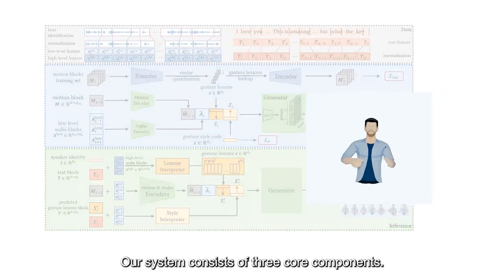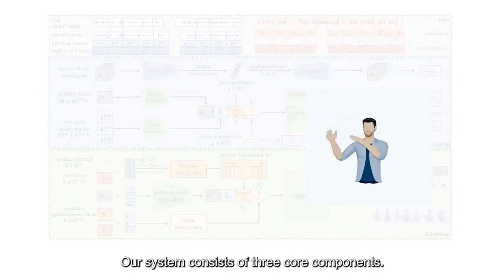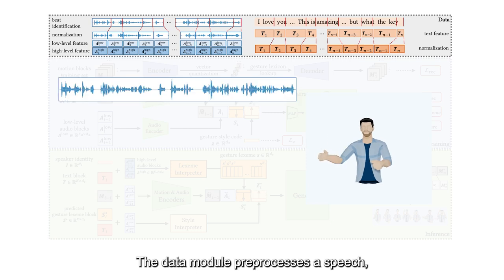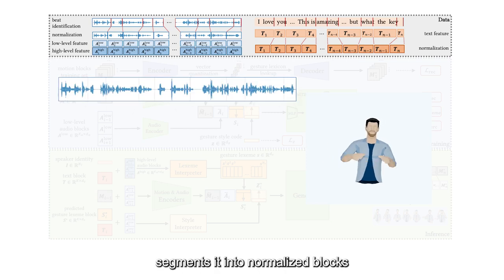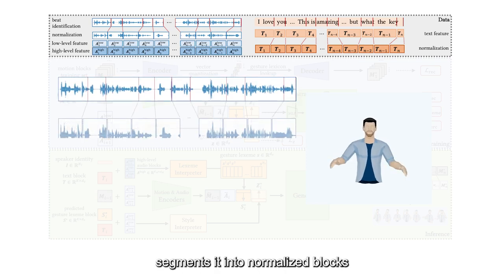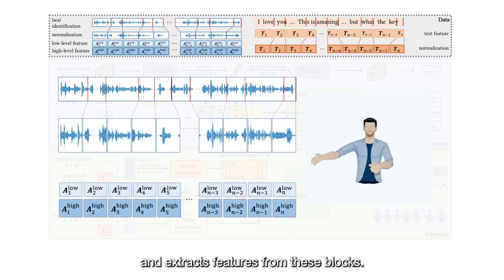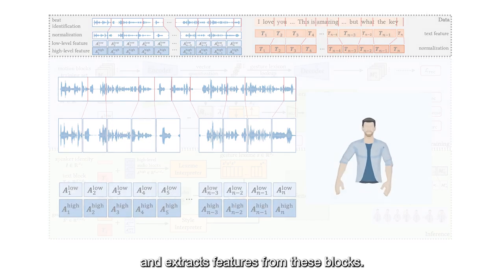Our system consists of three core components. The data module pre-processes a speech, segments it into normalized blocks according to the rhythm of the speech, and extracts features from these blocks.